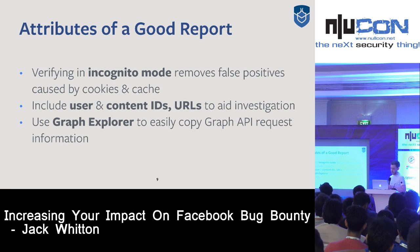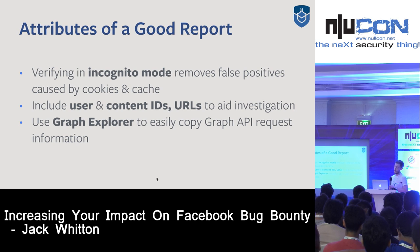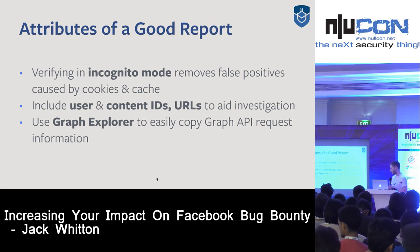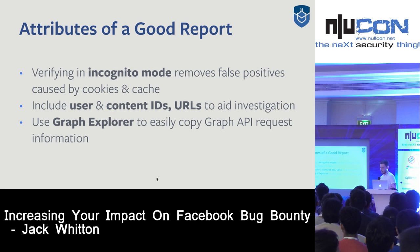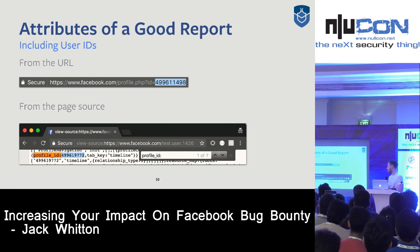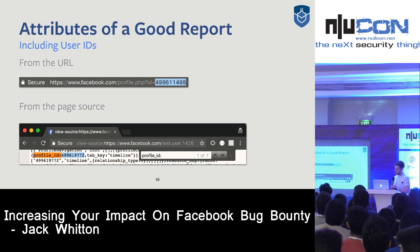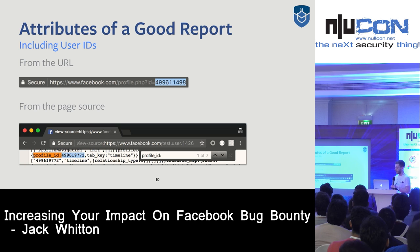On the developer site we have the Graph Explorer, which lets you test API issues pretty easily and lets you share information with us, including all the relevant information needed to validate a Graph API-based issue. To get the user ID, it's in the URL in the ID parameter. If you have a username assigned to your profile, you need to view the source and copy profile_ID. Including these IDs really helps our investigation.